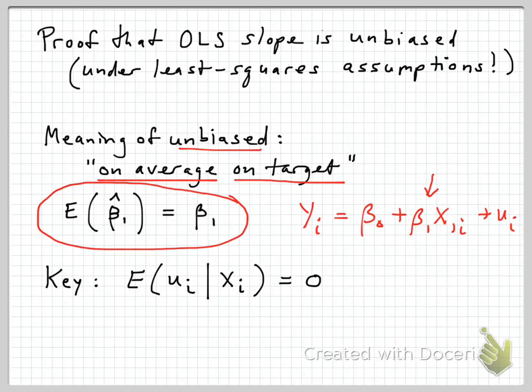You're taking random samples of the whole population, and every time you take a random sample you get a slightly different group of people or observations, and therefore estimates of beta 1 are going to vary from one sample to the other. Sometimes it'll be higher than the population value beta 1, sometimes it'll be lower, but over many, many random samples, on average you're going to be right on target. That's unbiased, and that's a really desirable property. If it's biased, you could be systematically off in one way or another, and you're going to draw poor conclusions from such a regression.